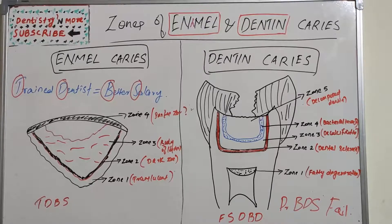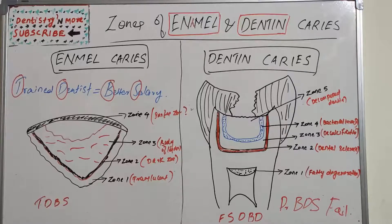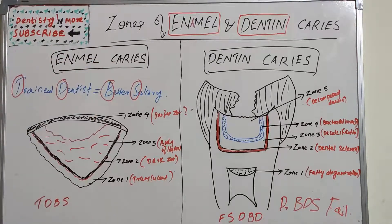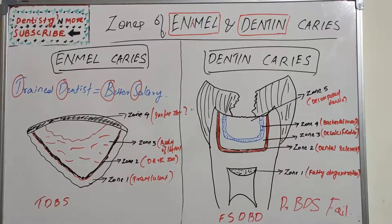Hello everyone, welcome back to another session in Dentistry and More. Today we have a small topic in oral pathology: zones of enamel and dentine caries. We've been learning dental caries from early years in the BDS curriculum, but this is specifically about how various zones are present in advanced caries in enamel or dentine. These zones are visible when there is polarized light transmitted through the lesion.